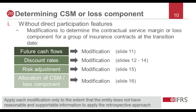For example, if an entity has reasonable and supportable information about the discount rates it would use for the full retrospective approach, it should use those discount rates. If it does not have such information about the cash flows, but does have reasonable and supportable information necessary to apply the cash flow modifications, it should use the modifications to apply the modified retrospective approach. We will now go through each of those modifications in turn.